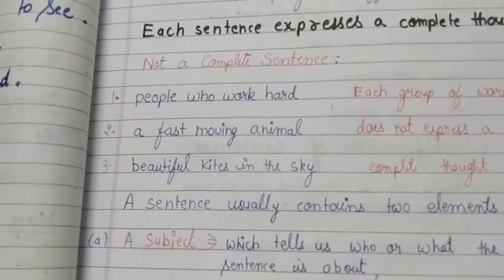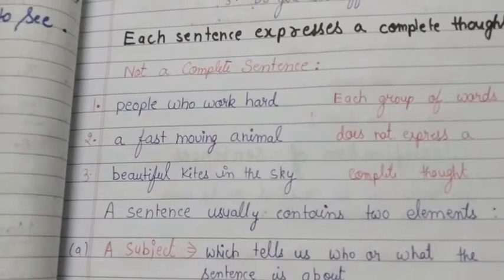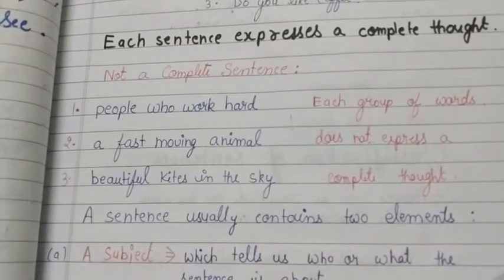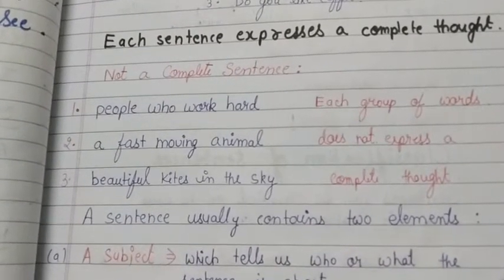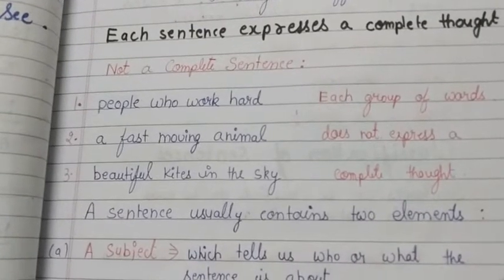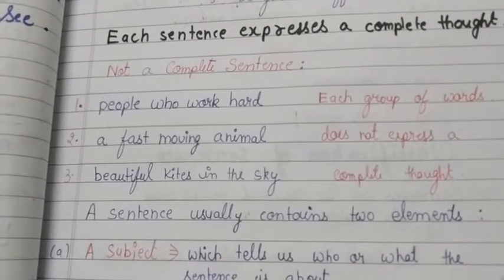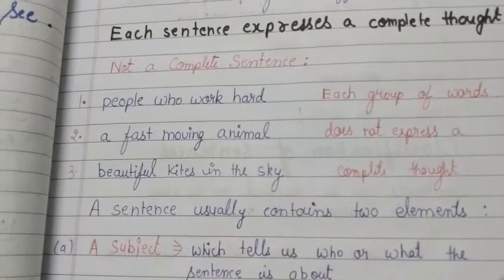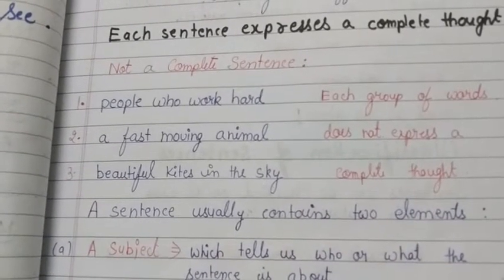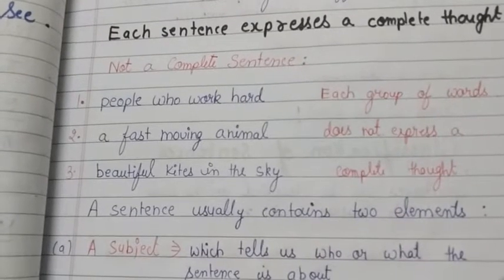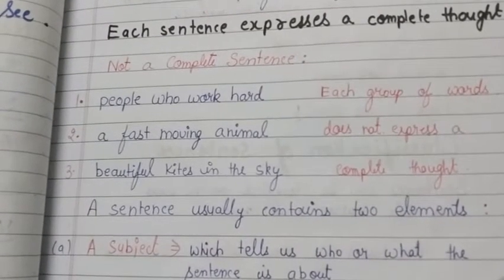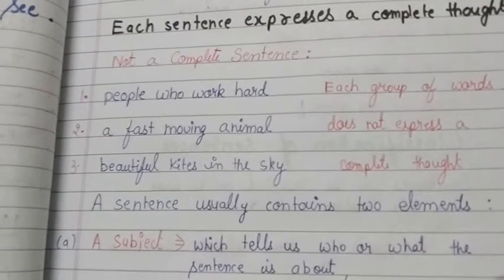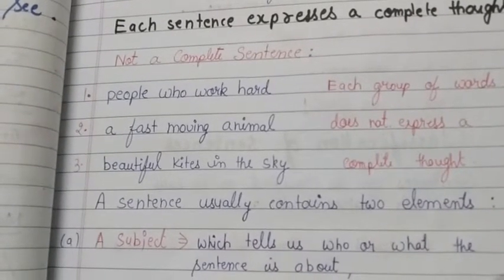The thing you have to remember is that each group of words does not express a complete thought. It is not necessary or mandatory that each group of words will express a complete thought. Examples: 'People who work hard', 'A fast moving animal', 'Beautiful kites in the sky' — these are examples of not a complete sentence, as each group of words does not express a complete thought.